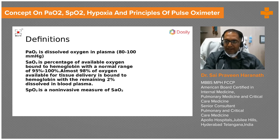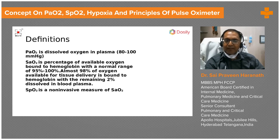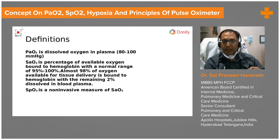SpO2, measured on the finger, is a non-invasive measure of saturation in the blood. When you do an arterial blood gas, you get all readings — pH, PO2, PCO2, bicarbonate — as well as the SaO2 in the blood, while SpO2 is measured at the skin level.